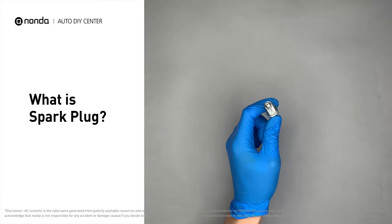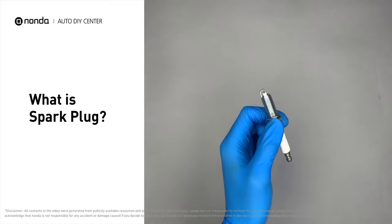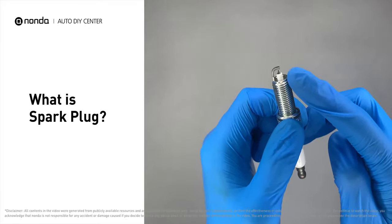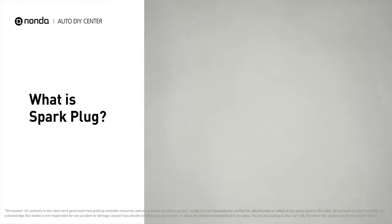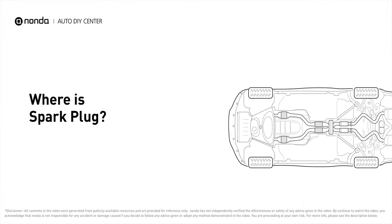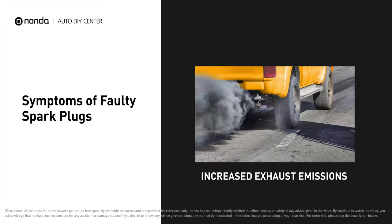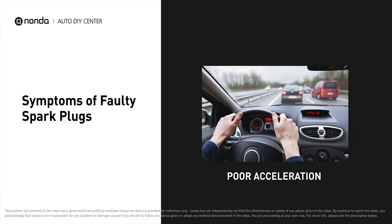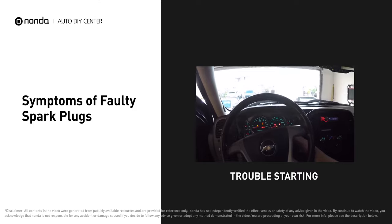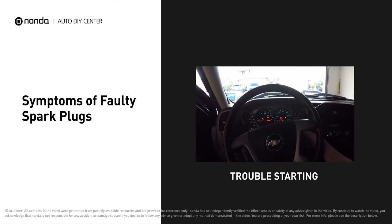Spark plugs are part of the ignition system that supplies the spark that ignites the air-fuel mixture, creating the explosion that makes your engine produce power and move your car forward. In 4-cylinder engines, spark plugs are typically located on the engine's top or side in a row; in inline 6-cylinder engines, they are usually on the top or side of the engine head. Faulty spark plugs can result in increased exhaust emissions, poor acceleration, and if completely dysfunctional, your car will not be able to start.